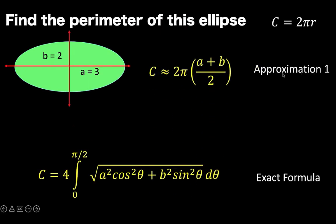This first formula is good enough to approximate the perimeter of an ellipse. This is based on the fact that a circle is a special kind of ellipse when the value of a and b are equal. And since we know that the circumference of a circle is given by 2 pi r, then this r can be approximated by the average of a plus b, where a is half the length of the major axis and b is half the length of the minor axis.